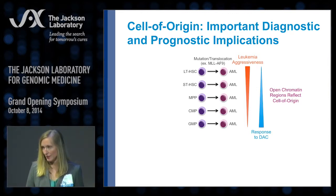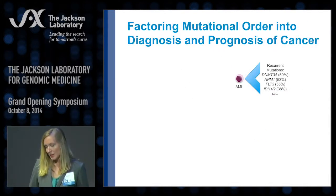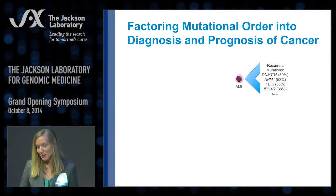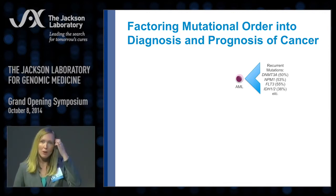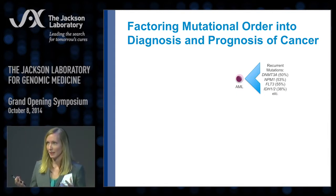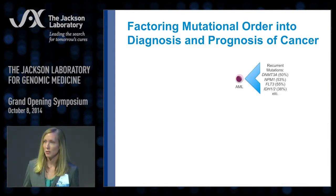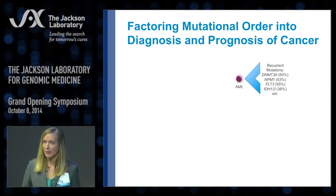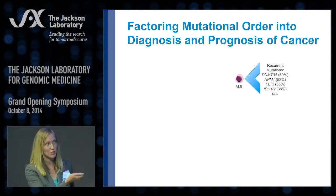Finally, I wanted to tell you about one other project just getting underway in the lab. This addresses an area where there are currently no clinical or diagnostic methods to determine mutational order in the progression of cancer. Many studies, including whole genome sequencing of AML tumors, have identified a number of recurrent mutations in these populations and the frequencies at which they occur.